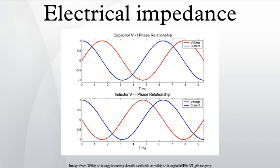Impedance is defined as the frequency domain ratio of the voltage to the current — that is, the voltage-to-current ratio for a single complex exponential at a particular frequency jω. In general, impedance will be a complex number, with the same units as resistance, for which the SI unit is the ohm. For a sinusoidal current or voltage input, the polar form of the complex impedance relates the amplitude and phase of the voltage and current.